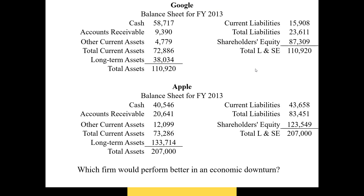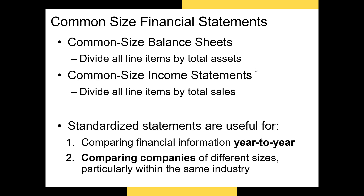Let's use some real-world data. I've pulled together data from both Google and Apple — their balance sheets for fiscal year 2013. If I asked you which firm would perform better in an economic downturn, hopefully you might say there's not enough information to make a determination here, and you'd be correct. The ideal way to analyze those financial statements is by using what are called common-size financial statements.